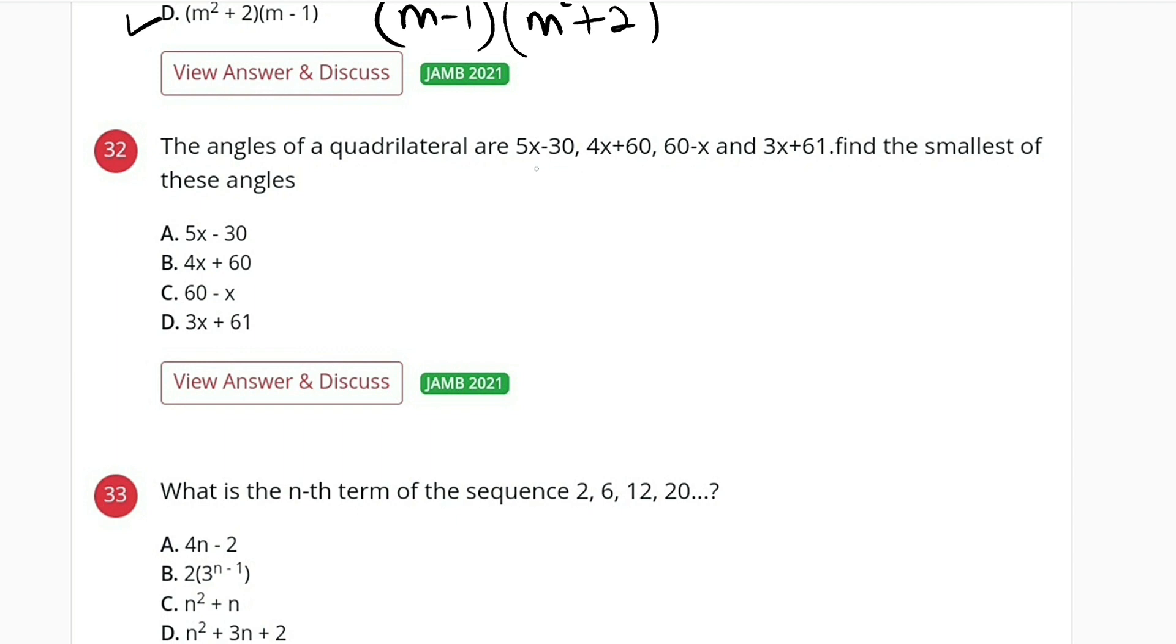So we have 5x minus 30, plus 4x plus 60, plus 60 minus x, and lastly plus 3x plus 61. The whole of this must be 360 degrees.